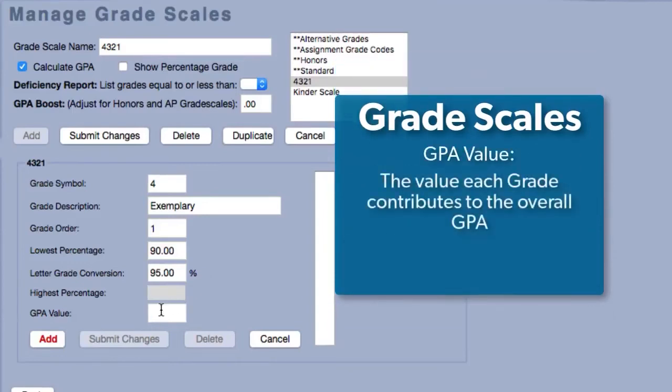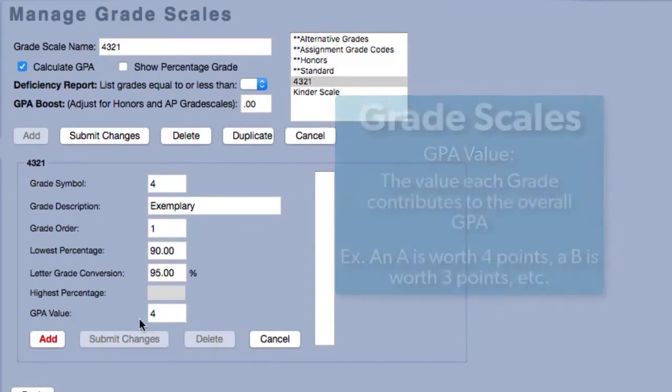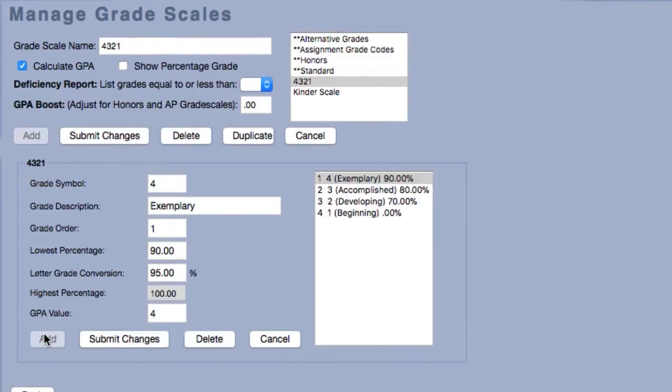Finally, the GPA value refers to the point value which the grade contributes to the GPA. In the standard grade scale, an A has a GPA value of 4, a B has a GPA value of 3, and so on. Once you're done adding grades to the grade scale, hit Submit Changes to complete the process.